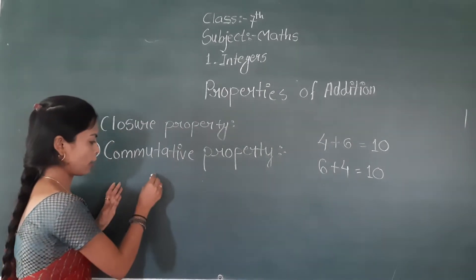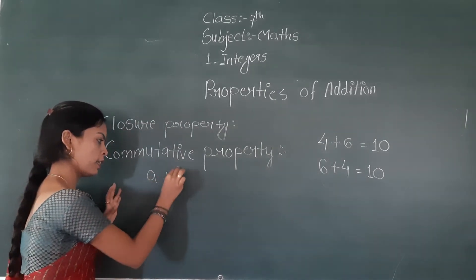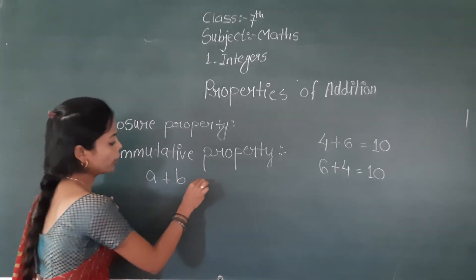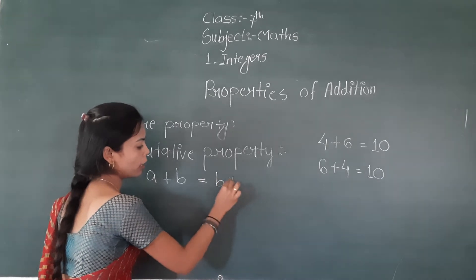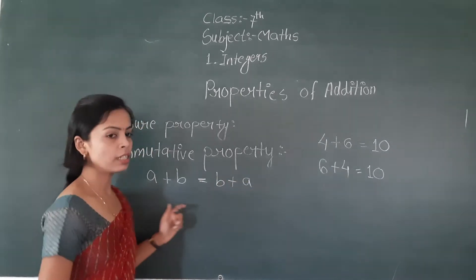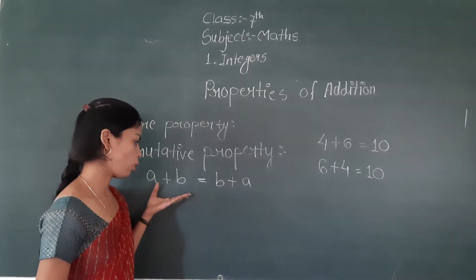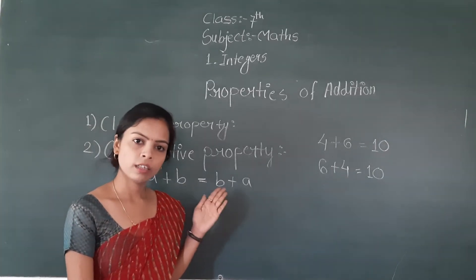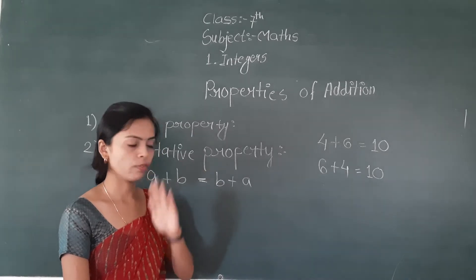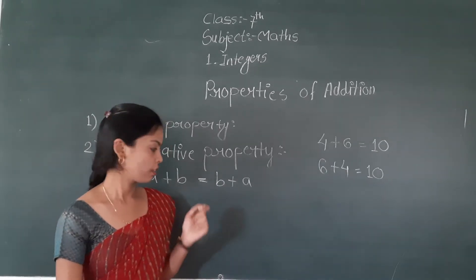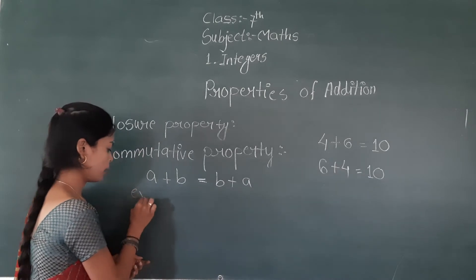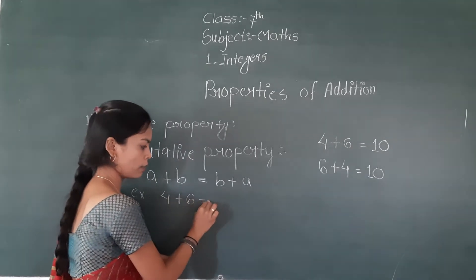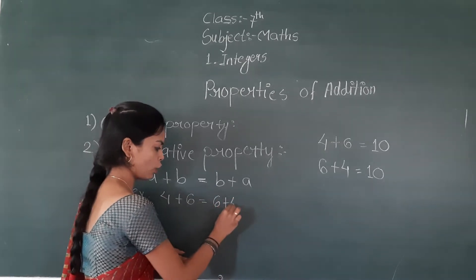When you add two integers, suppose a plus b — this is your first integer, this is your second integer. If you add these two, it is equal to b plus a. That means the order of the integers does not matter. For example, four plus six is equal to six plus four.